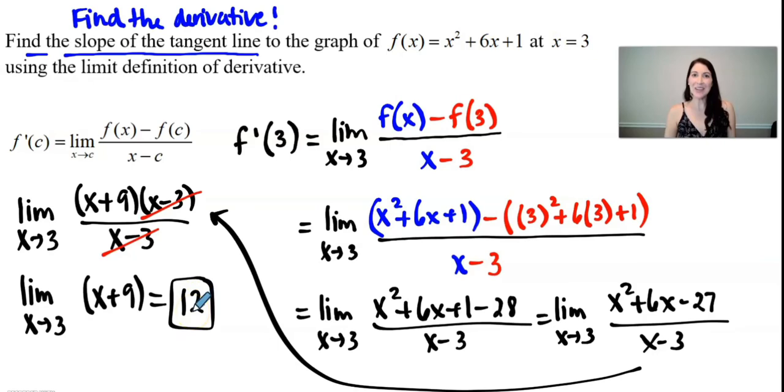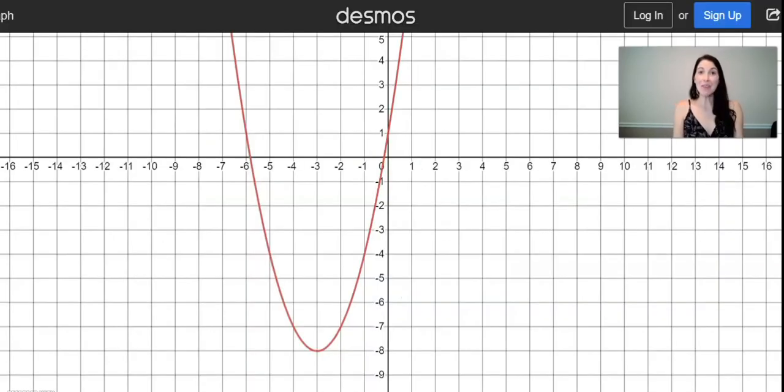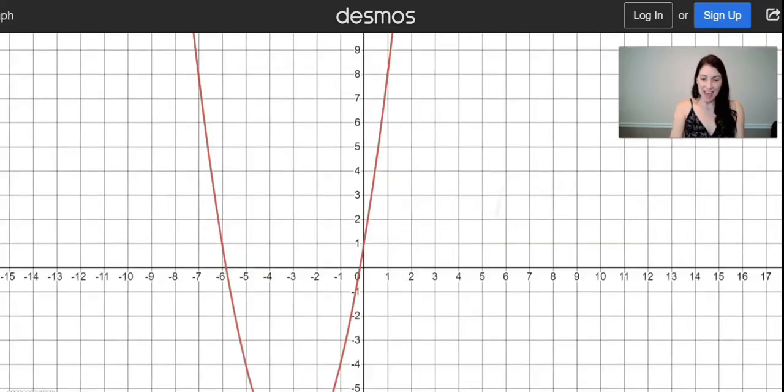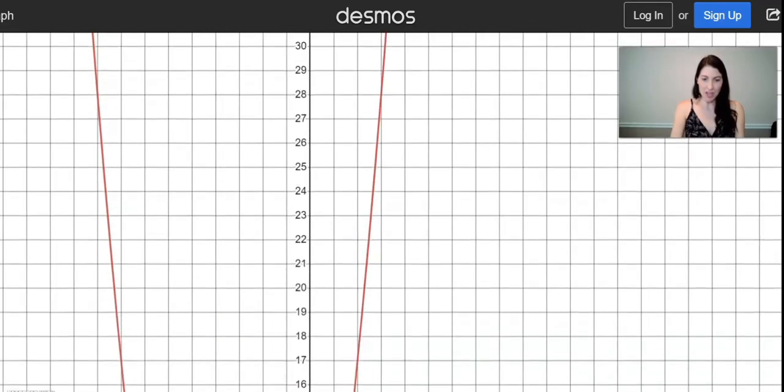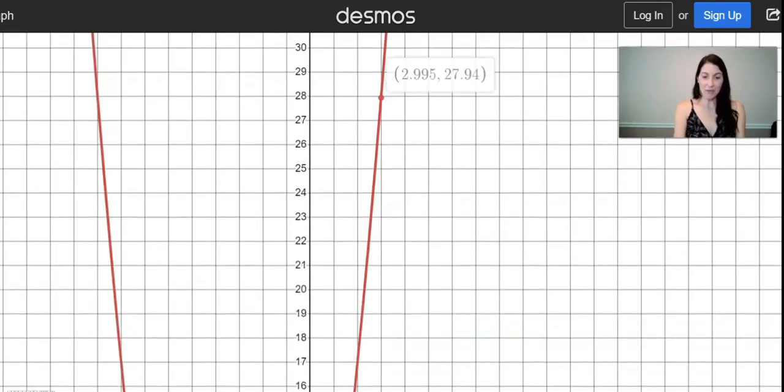Let's go ahead and take a look at what this would look like on a graph. I have typed the function into Desmos. And here is our original function, x² + 6x + 1. And if we are to look at the x value of 3, which I'm going to have to kind of scroll up here, right here at the x value of 3, if I were to draw in a tangent line, which means the line only comes and touches the graph at one point, the slope of that line would be a value of 12.